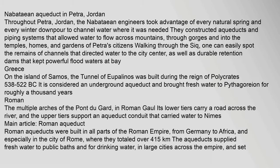Throughout Petra, Jordan, the Nabataean engineers took advantage of every natural spring and every winter downpour to channel water where it was needed. They constructed aqueducts and piping systems that allowed water to flow across mountains, through gorges, and into the temples, homes, and gardens of Petra's citizens. Walking through the Siq, one can easily spot the remains of channels that directed water to the city centre, as well as durable retention dams that kept powerful floodwaters at bay.